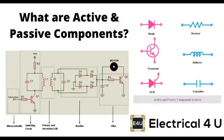The difference between passive and active components. Passive and active components are two fundamental types of electronic circuit elements, and they play different roles in electronic systems. Here's a brief overview of the differences between passive and active components.